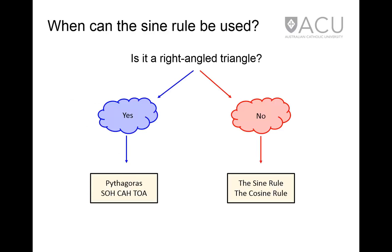The sine rule is to be used for non-right angle triangles. If the triangle is a right angle triangle, you might consider using Pythagoras or SOHCAHTOA to solve it. If the triangle is not a right angle triangle, consider using the sine rule or the cosine rule to solve it.